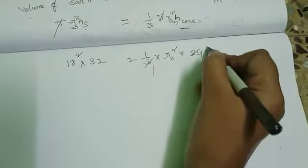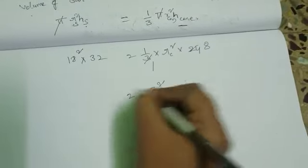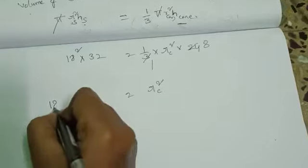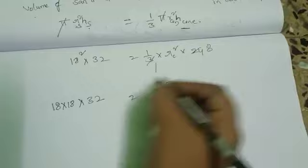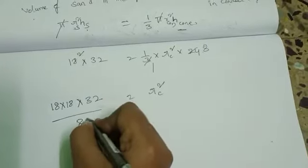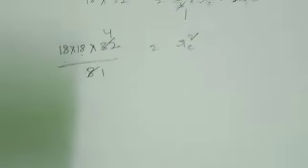3 ones are 3, 8s are... So r square equal to 18 square, 18 into 18, 32 into 8 comes to this side divided by 8. 8 ones 8, 4s. 18 into 18, 18 square is 324.